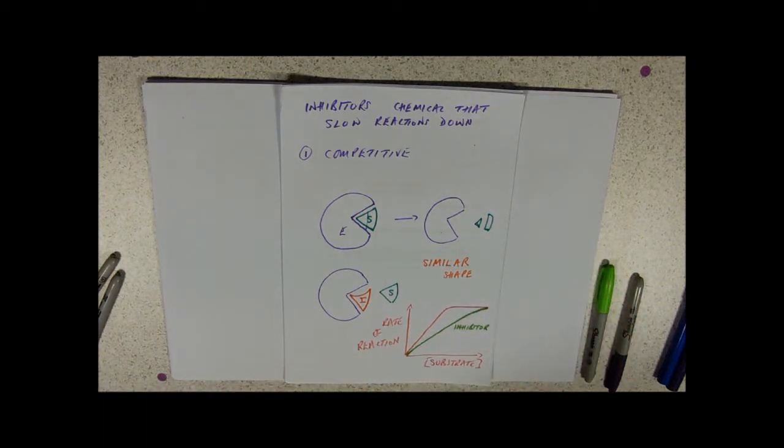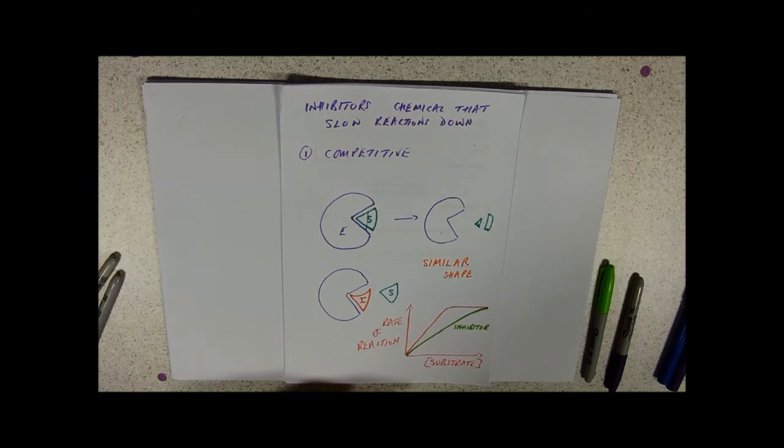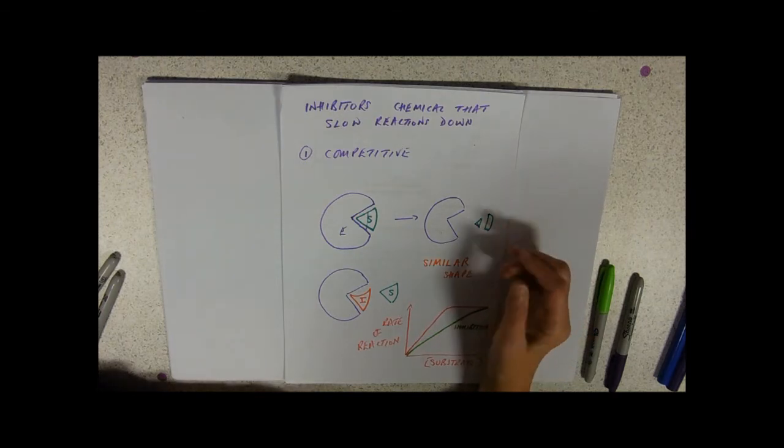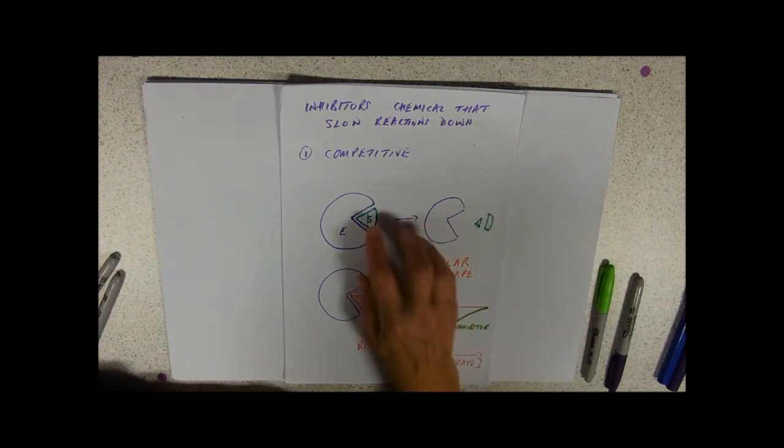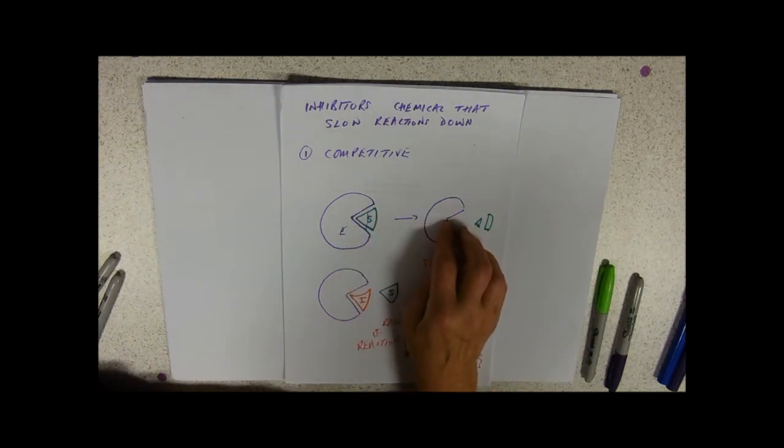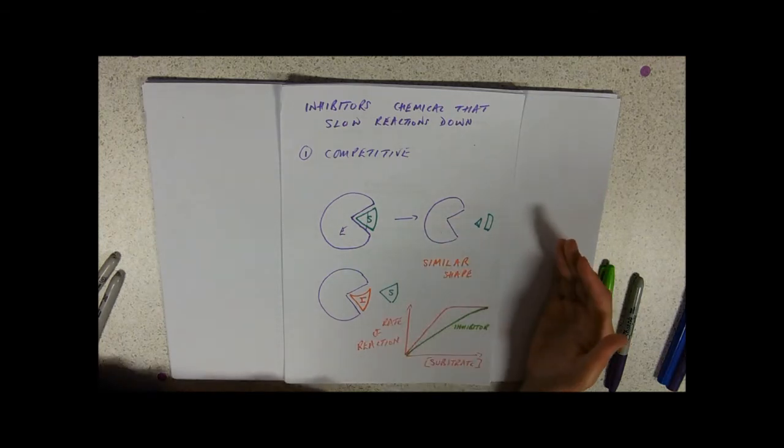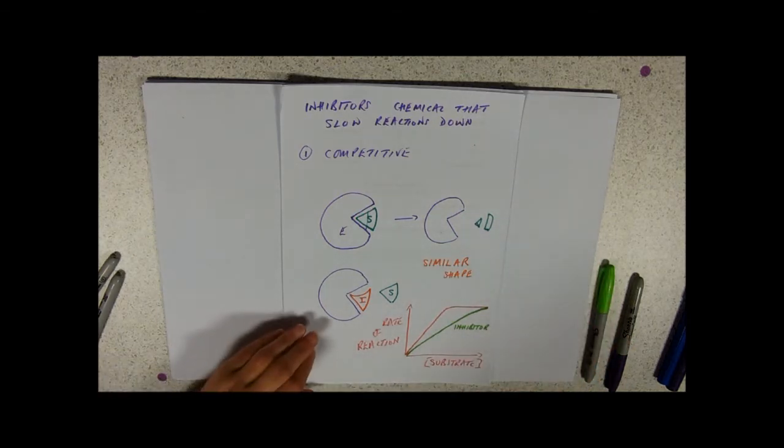Now that's really useful in cells because what it means is that if you're doing a reaction and you've got lots and lots of end product, you don't really want to make any more or too much more. You want to make it a bit slower, perhaps. This will inhibit the enzyme and slow the reaction down so that you don't make more of it. You don't make more than you need. So really, really handy end product inhibition.